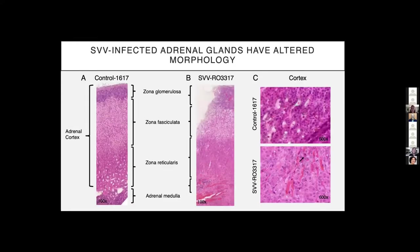Do SVV-infected adrenal glands have an altered morphology? What you can appreciate from this slide is a difference between our healthy control adrenal gland, showing the adrenal medulla and cortex in good shape, compared to our SVV-infected rhesus macaque, which has signs of hemorrhage in the medullary space extending throughout the adrenal cortex. We also found incidences of Cowdry-A inclusion bodies, which are a characteristic hallmark of alpha herpes virus infection.